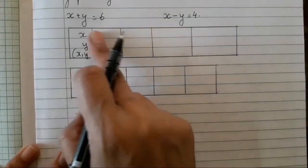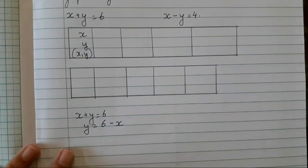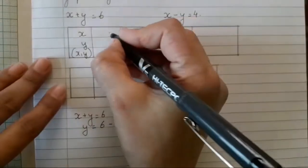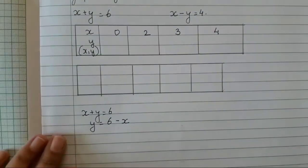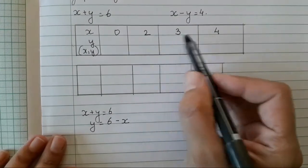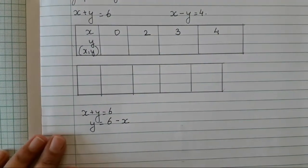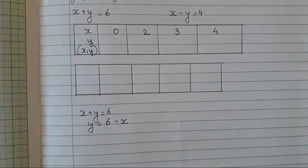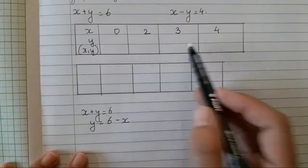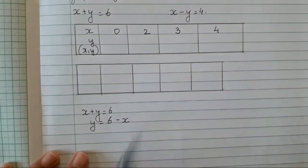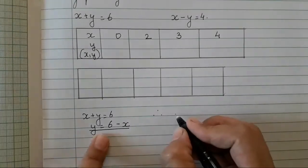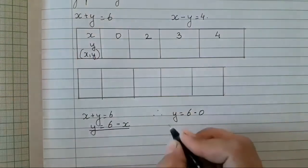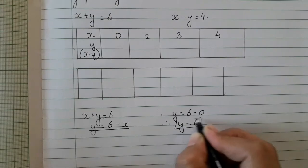We can take x as any values — I am going to take 0, 2, 3, 4. Take the smallest, closest numbers; you can take 0, 1, 2, 3 or similar. Just don't take bigger numbers or your graph might come wrong — stay within 5, and make 3 to 4 columns. Using y = 6 minus x: when x = 0, y = 6.